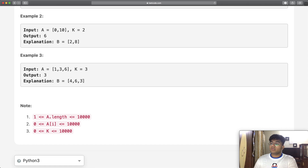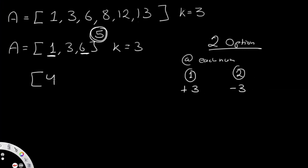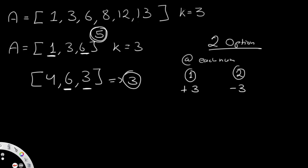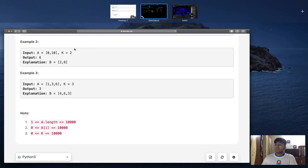The expected answer uses B equals [4, 6, 3]: they did 1+3=4, 3+3=6, and 6-3=3. The difference of this array is maximum minus minimum, which is 6 minus 3 equals 3. That is already smaller than what we had originally, so we output the difference of 3.